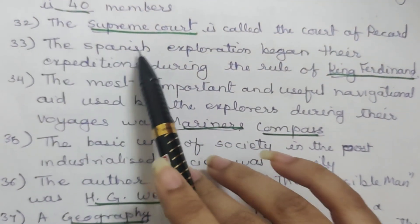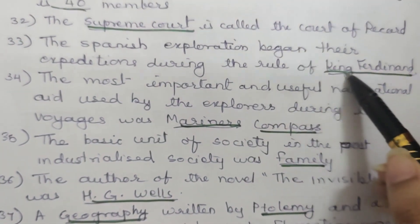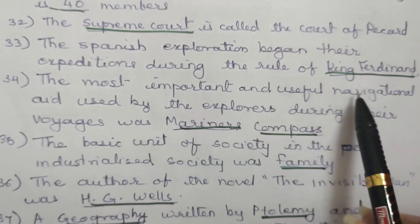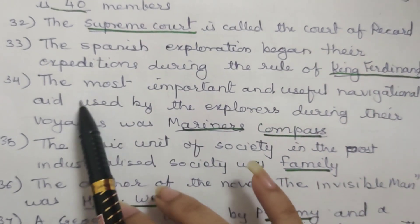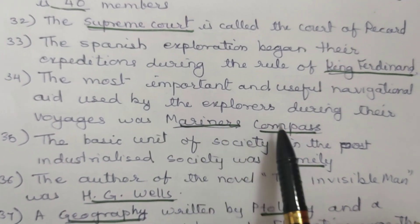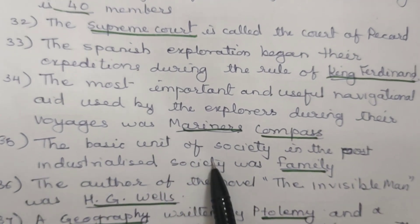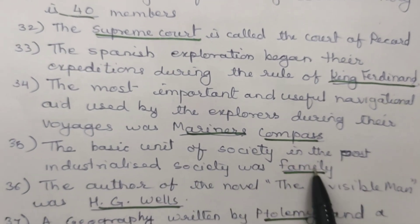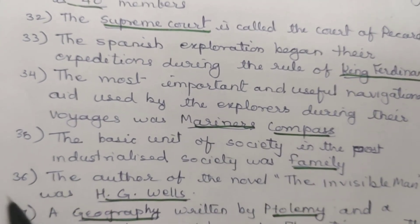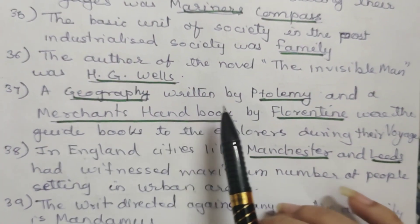33. The Spanish exploration began their expeditions during the rule of King Ferdinand. 34. The most important and useful navigational aid used by explorers during their voyages was the mariner's compass. 35. The basic unit of society in post-industrialized society was family. 36. The author of the novel Invisible Man was H.G. Wells.